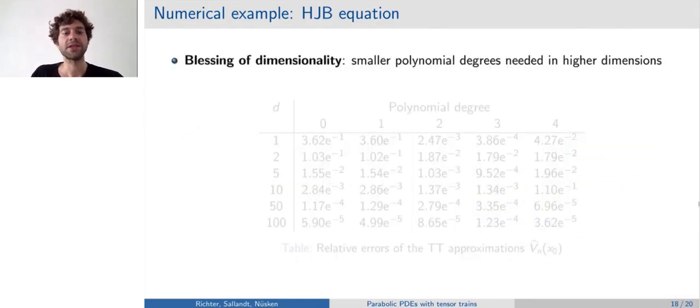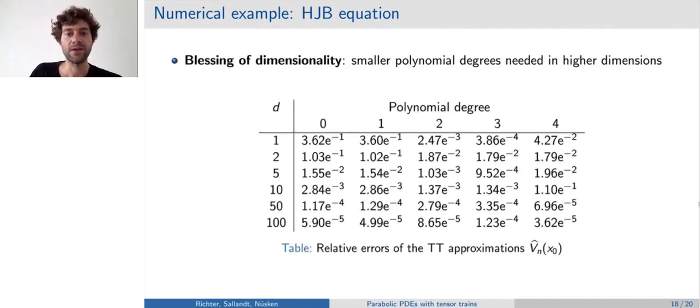For this example, it was quite interesting for us to see some kind of blessing of dimensionality. In some sense, actually, this problem gets easier if the dimension increases. For the tensor-trains, we saw that when looking at the polynomial degree needed for the ansatz functions in the tensor network. When we choose smaller dimensions for the problem, a higher polynomial degree was needed, whereas when we increased the dimension, the polynomial degree was enough to be zero. So this means essentially constant ansatz functions, which surprised us quite a bit. And we think that in general, it might be interesting to investigate this phenomenon further.